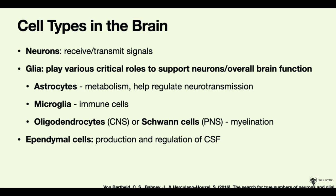It was previously thought that in the brain, glia outnumbered neurons by up to 50 to 1, but recent evidence is showing much smaller ratios. Some scientists are now suggesting a ratio of 1 to 1 between neurons and glia. There is a review linked at the bottom if you're interested, but a lot more research is needed in this field.